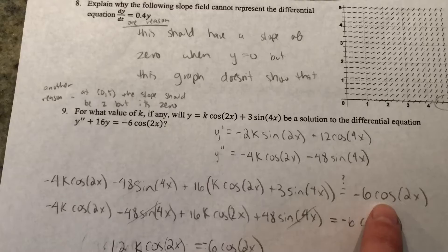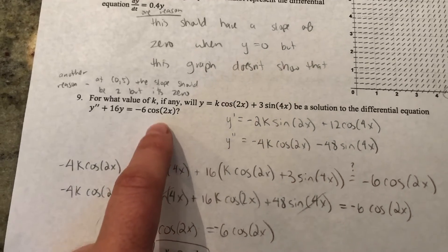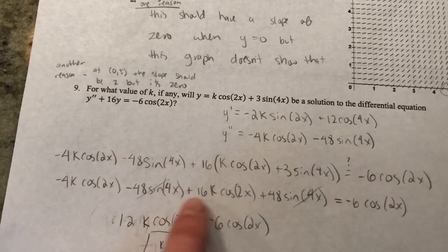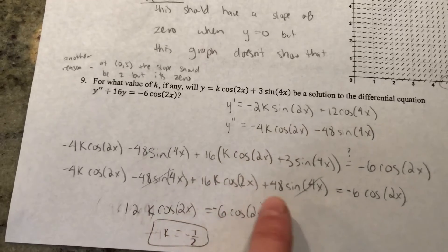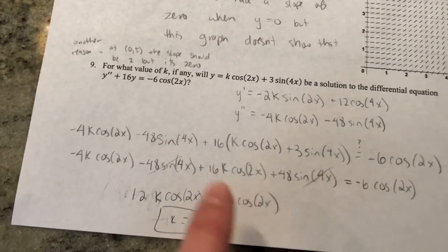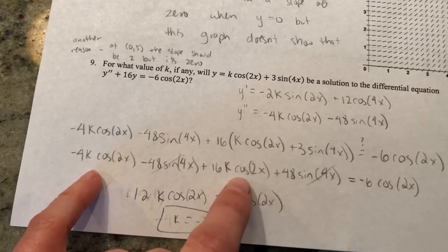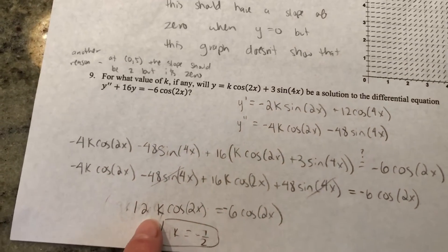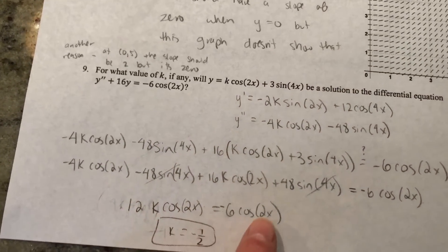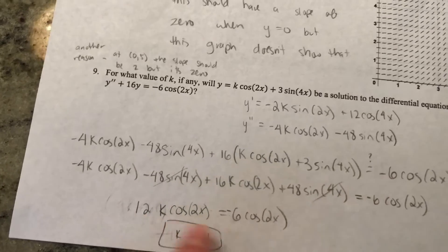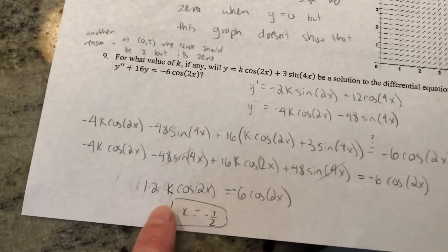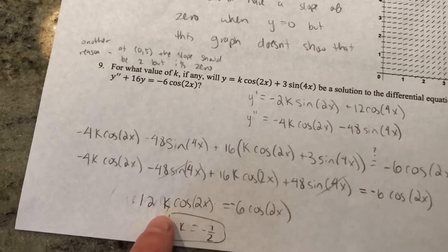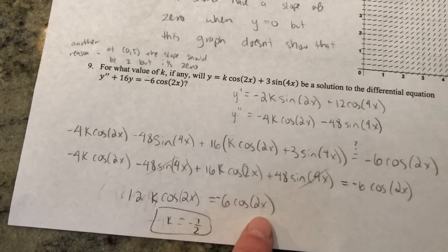Then just simplify and distribute and see what cancels out. Those cancel out, and then we simplify these two to become 12k cos(2x). We're trying to find the value of k that makes that true. If k is -1/2, then they'll both be -6cos(2x).